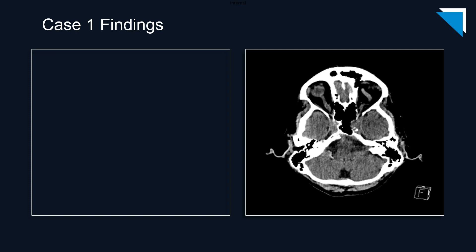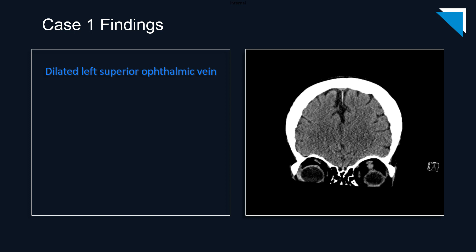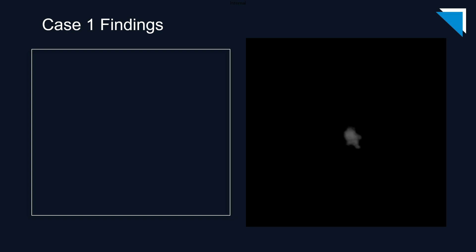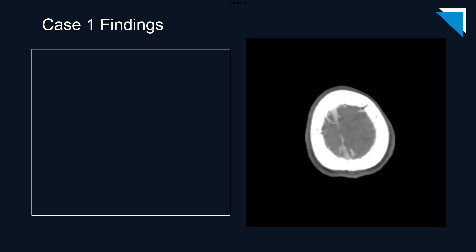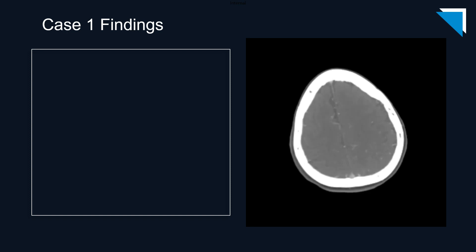Let's review the findings on this study. The left superior ophthalmic vein is engorged, and the finding is nicely delineated on this coronal image. A follow-up contrast-enhanced scan was obtained; these are the axial images from that study.